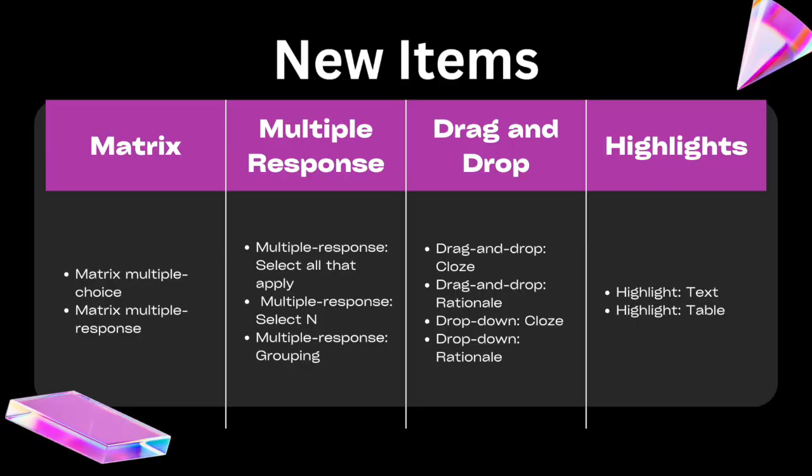It starts with the matrix, and there are a couple of different options within the matrix: matrix multiple choice and matrix multiple response. Then we have multiple response, also known as select all that apply, and multiple response grouping. Another category includes drag and drop, drag and drop rationale. We also have highlights, where you might be asked to highlight text or highlight within a table. These might be used for something within a case study — they call these hotspots. For example, it might ask what are some abnormal findings based upon this physical assessment, and you'd have to highlight those things.